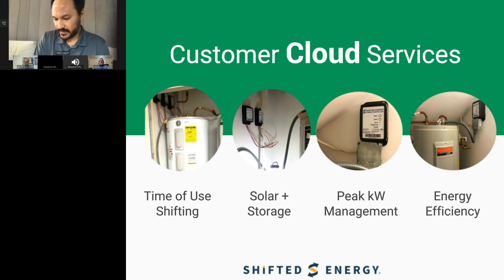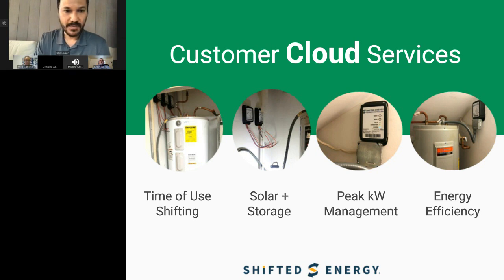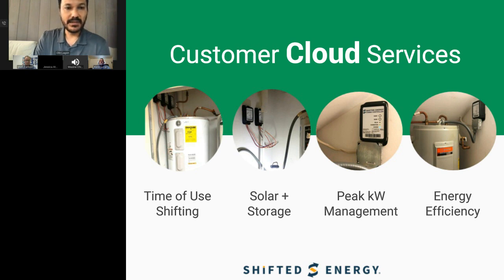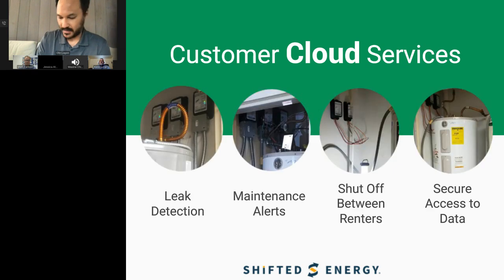On the customer side, we offer value adds as well. We can't run demand response for utility customers all the time, so when there's a seasonal shift away from DR, we can move services to the customer — time-of-use shifting for economic gain, solar-plus-storage integration where we use their water heater as a battery, and peak KW demand charge reduction for customers on demand charges. We also have an eco mode to squeeze out some energy efficiency. On the cloud services side, we offer leak detection and maintenance alerts, and for property managers we can connect to property management systems and shut down the heater between renters.